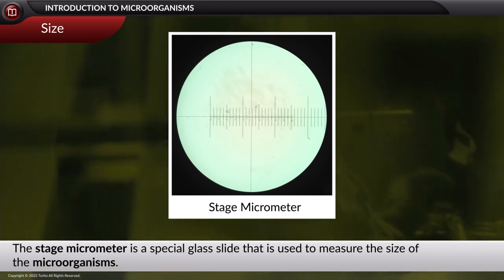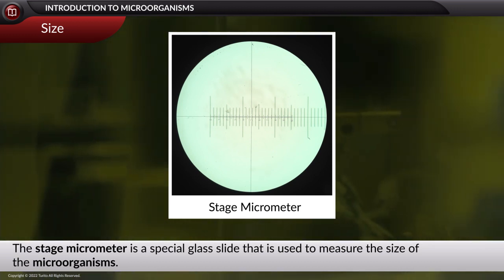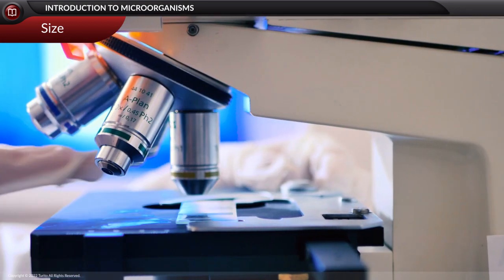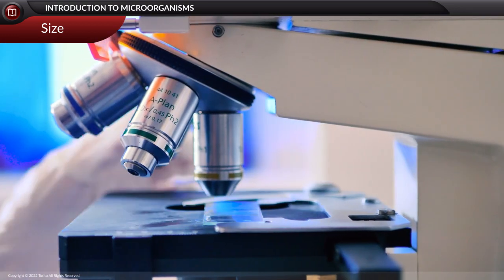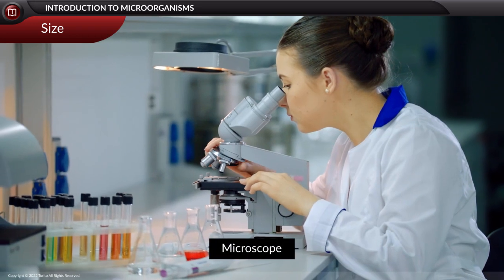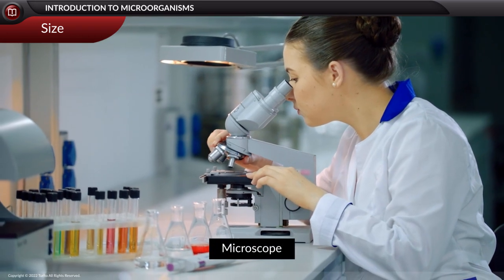The stage micrometer is a special glass slide used to measure the size of microorganisms. The device that makes microorganisms visible is the microscope.